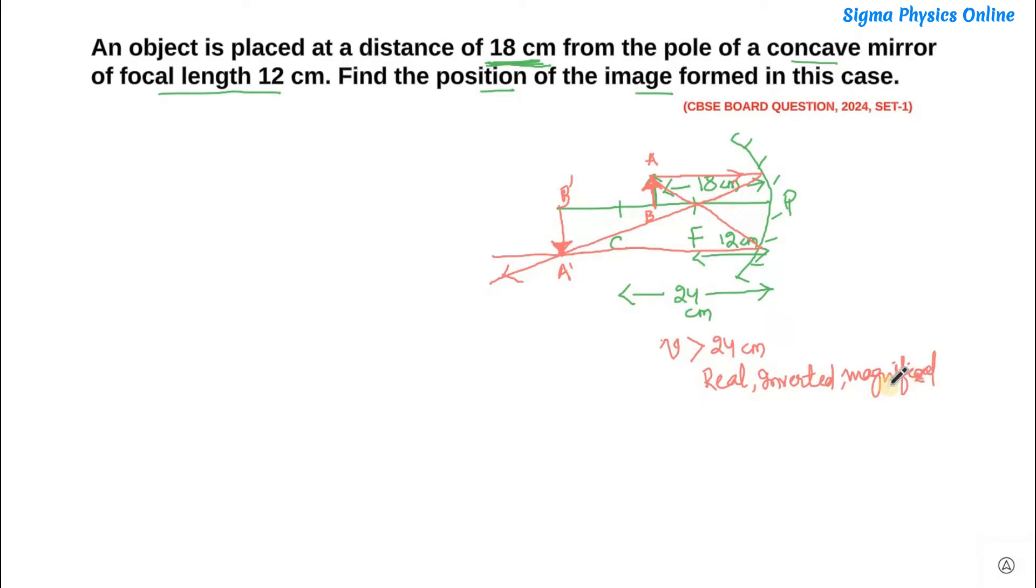Now sometimes students ask me, is it necessary to draw the ray diagram always? I always would insist them to draw the ray diagram because looking at the ray diagram you can predict what your answer should be. Like here we have predicted that our image distance should be more than 24 cm and it's a real image, inverted image, and it's a magnified image. So a ray diagram helps us to know what will probably our answer be.